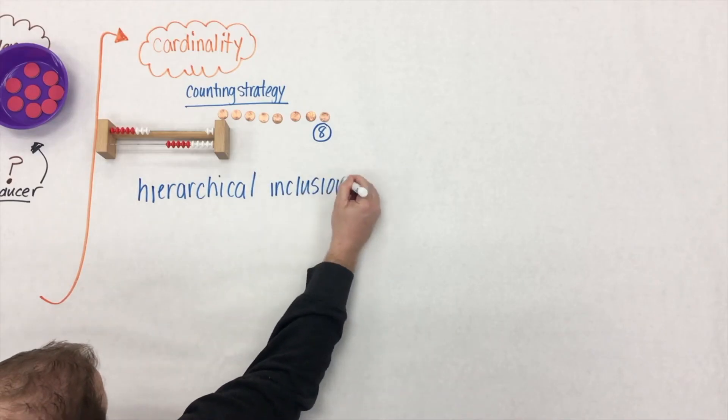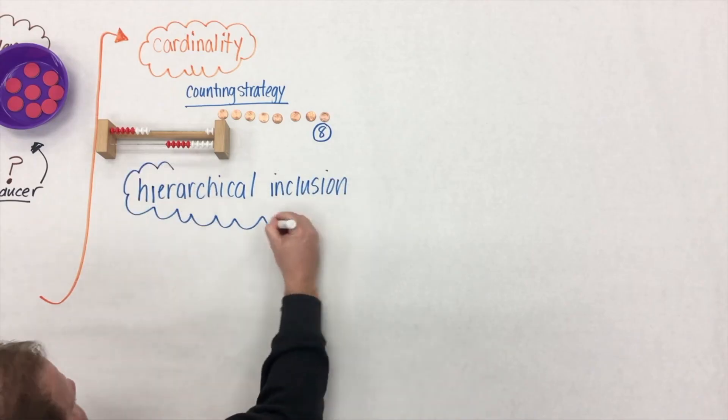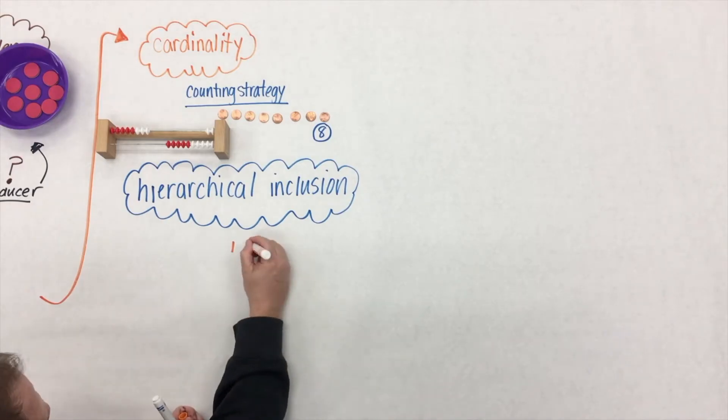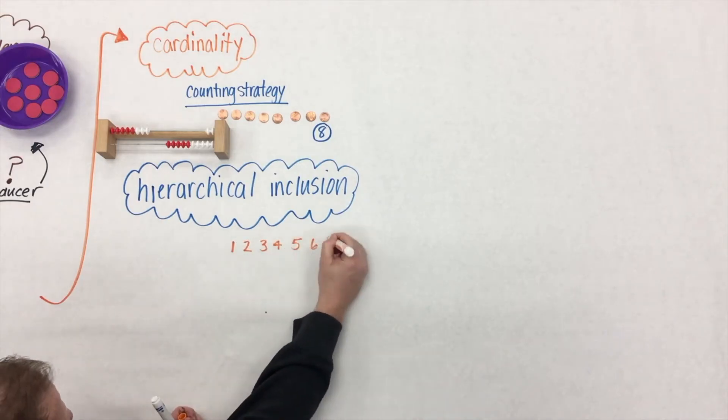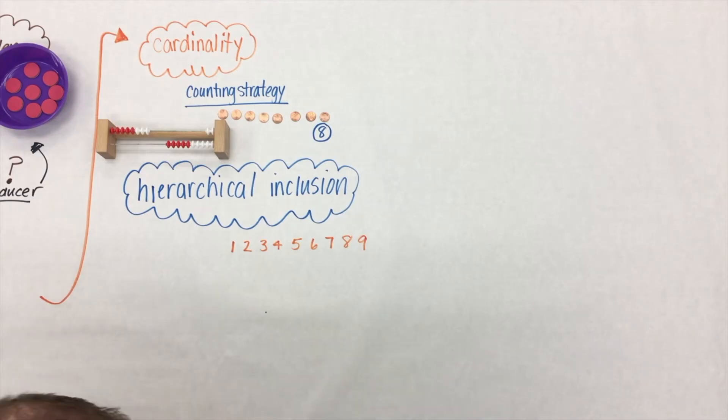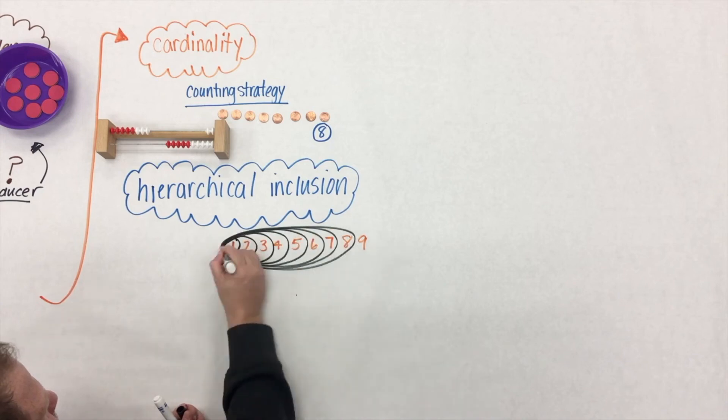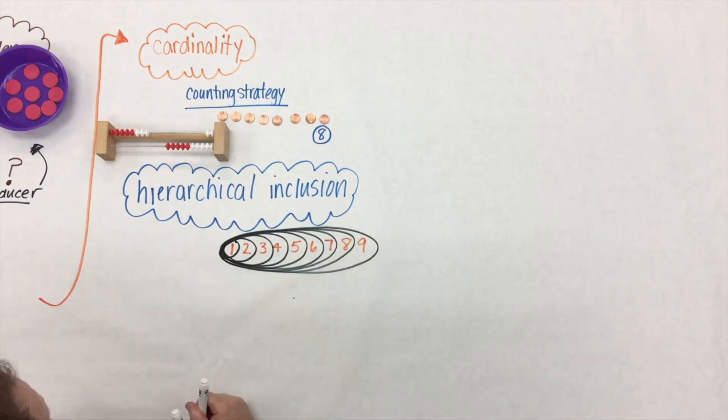We then move on to hierarchical inclusion. Yeah, it's a really big word. But what all that it means is that students understand that numbers are nested inside other numbers. So if we take that penny, for example, students would know that if you had eight pennies, you must have seven pennies. That numbers are nested inside the numbers.